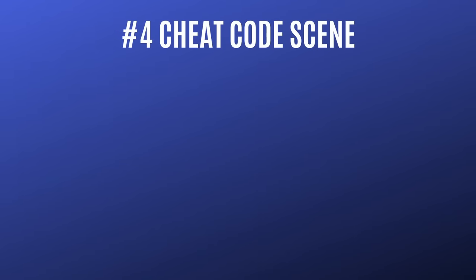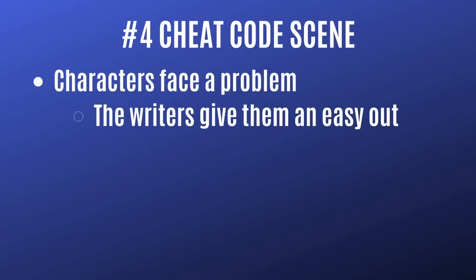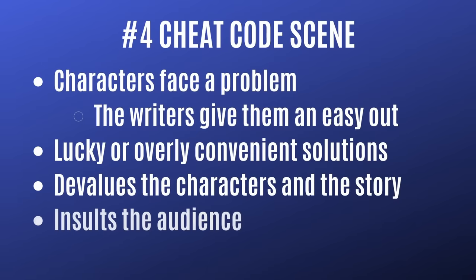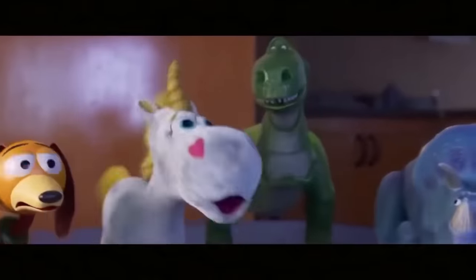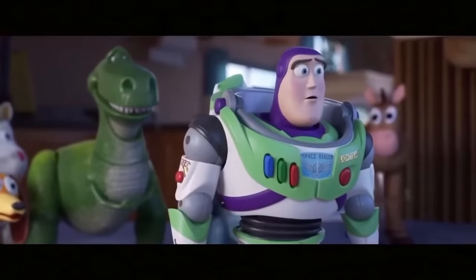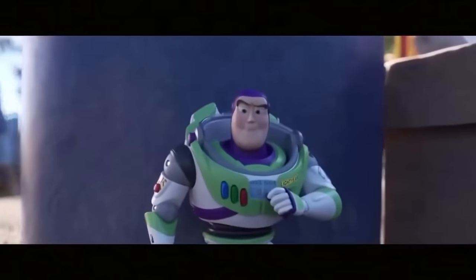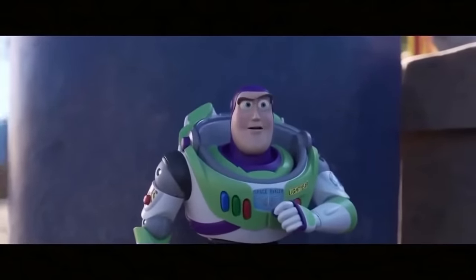The fourth kind of bad scene is the cheat code scene. This is when characters face a problem and instead of solving it by using their brains, teamwork, or skills, the writers give them an easy out. This often involves lucky or overly convenient solutions, and in the end it devalues the characters and makes them look stupid. I have two examples for this one. The first comes from Toy Story 4 — when Buzz Lightyear faces a dilemma, he presses his red button and the script tells him where to go or what to do. It's cheap, it's lazy, and it insults an iconic character.